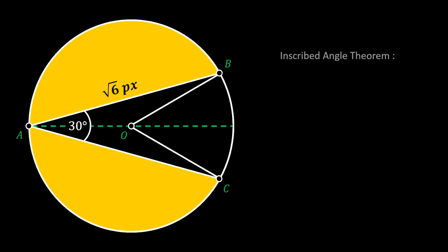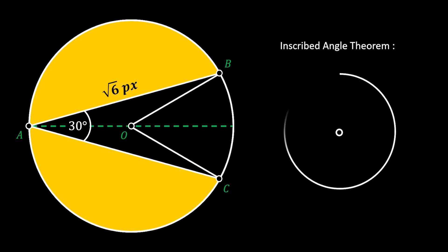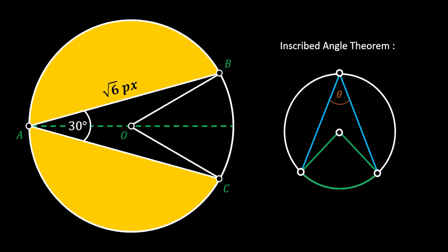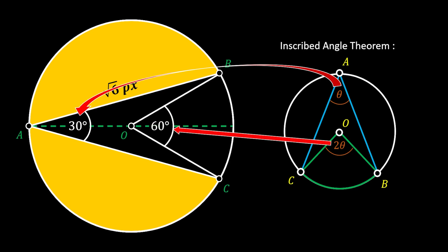Now we'll use the inscribed angle theorem to find the angle at point O. This theorem states that an angle theta inscribed in a circle is exactly half of the central angle that subtends the same arc. Marking all points the same way as on our sketch, the angle theta corresponds to our 30-degree angle, which means the angle at point O is the central angle — twice 30 degrees — giving us 60 degrees.